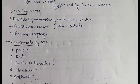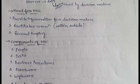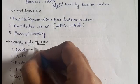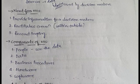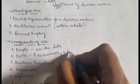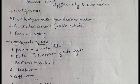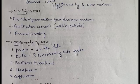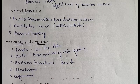The components of MIS are five: people, data, business procedures, hardware, and software. People are those who will make use of the data. Data is recorded by the information system and is used for functioning in every department and organization. Business procedures cover all the how-to's — how to record, store, and analyze the data.